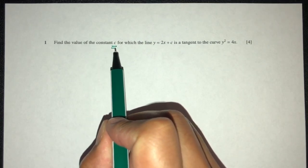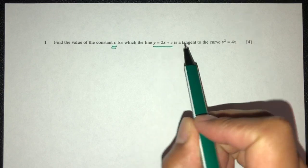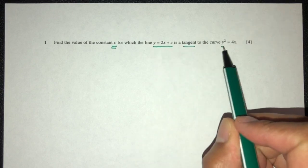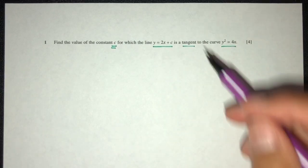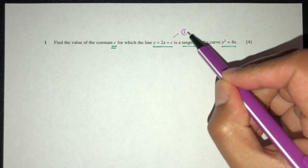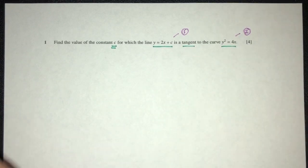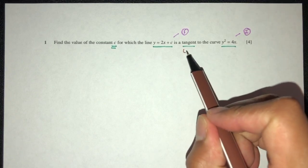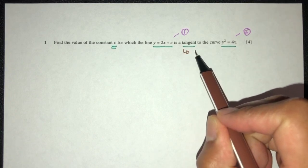Now, for this question, we have to find the value of c for which the line is a tangent to the curve. As you can see, we have this one equation and two equations. What does it mean to be a tangent to the curve? It means that they meet at exactly one point.